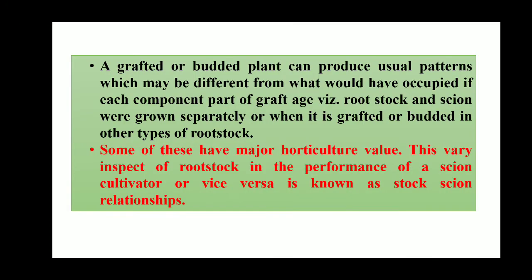A grafted or budded plant can produce unusual patterns which may be different from what would have occurred if each component part of the graftage — for example, rootstock and the scion — were grown separately, or when grafted or budded on other types of rootstock. If we study by planting individual rootstock as well as scion, and a graft of both, we will have different yield and characteristics. So rootstock is very important and some of these have measured horticultural values.